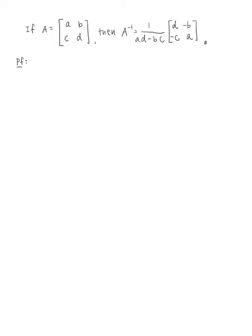We just learned the definition of an inverse matrix — A and A inverse are inverses of each other. If I multiply A times A inverse, this is going to become an identity matrix. So let me keep our A as [A, B, C, D], and then write A inverse as [E, F, G, H]. This whole thing must equal the identity matrix: [1, 0, 0, 1].